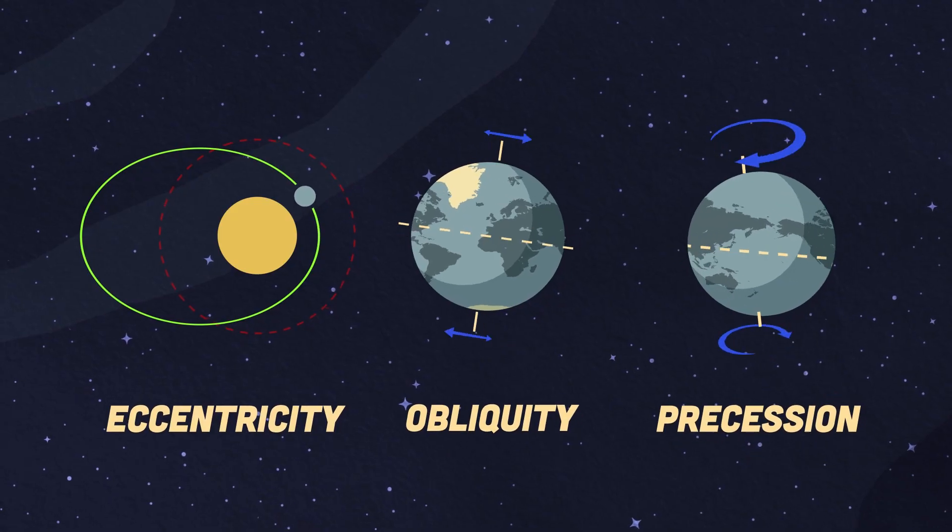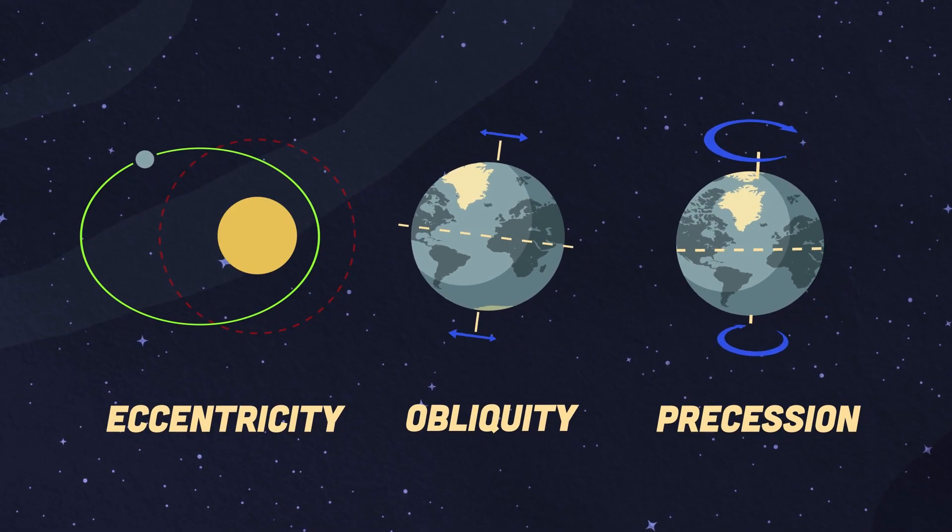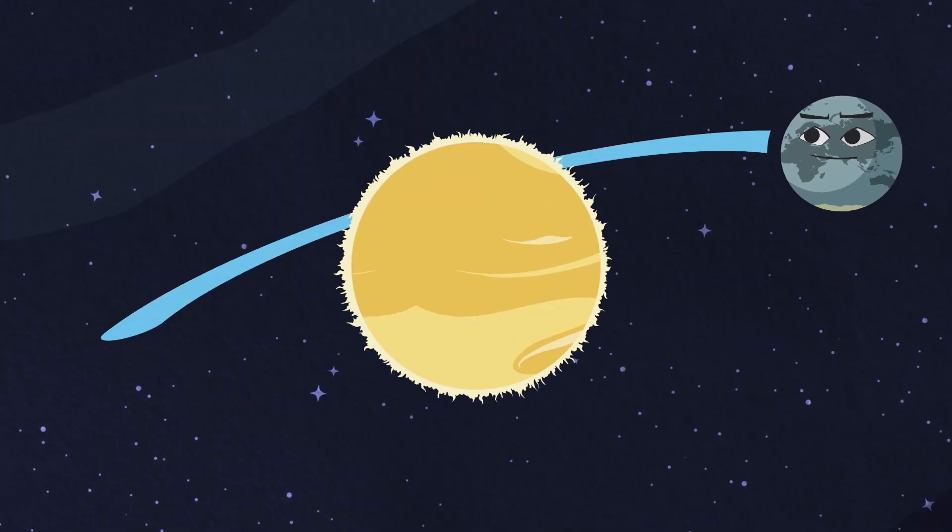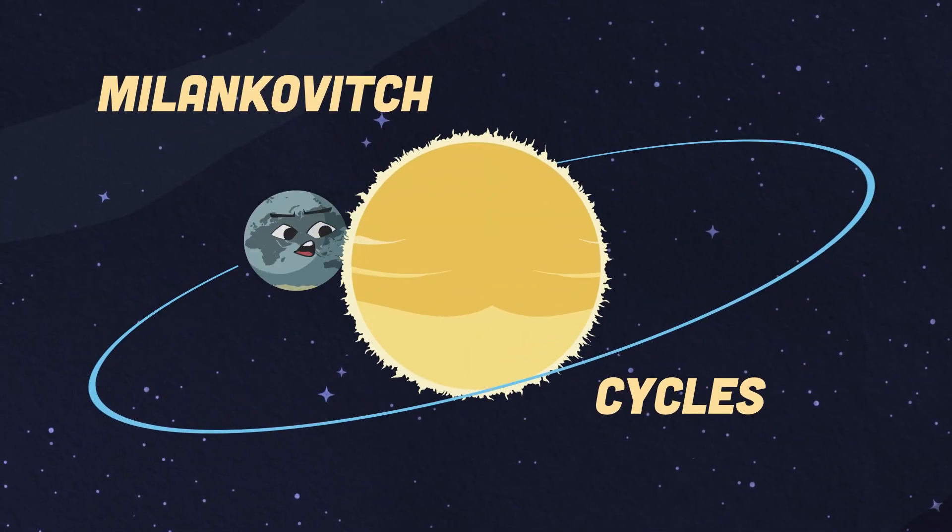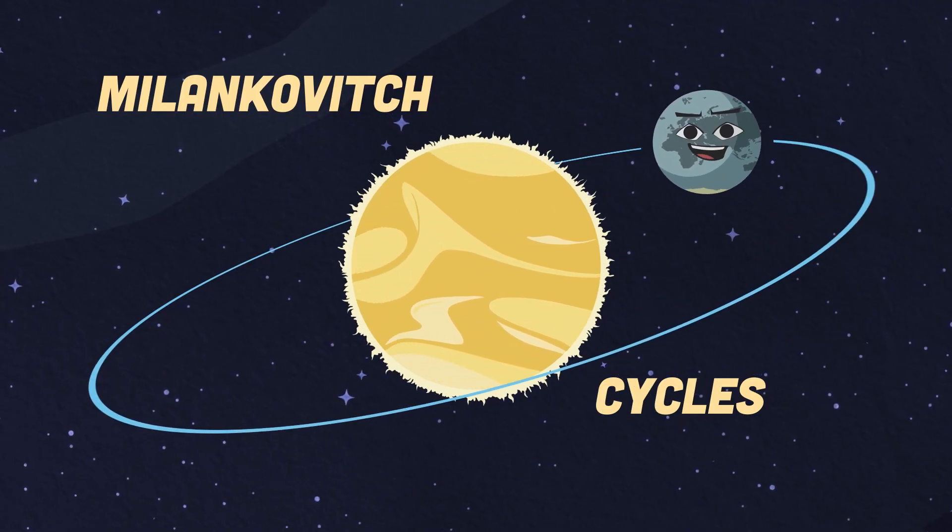All three of these cycles interact with each other in such a way it changes Earth in many ways within climate change. What are the Milankovitch cycles and their role in Earth's climate change? Let's take a look at the three cycles and how they rearrange.